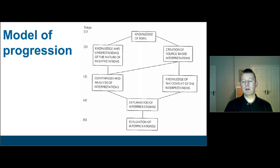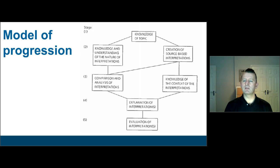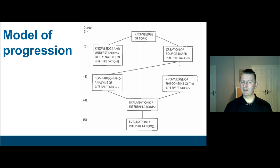We can also start to think about the context in which interpretations were made. For example, with the picture of Lady Jane Grey from the 19th century, we need to think about what people in the 19th century were doing creating such images and what purpose it served for them. Only when you've done those first three levels can you really hope to think about how we'd explain and evaluate those interpretations.